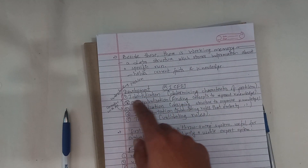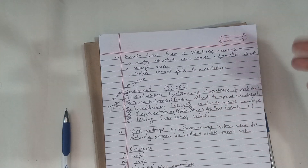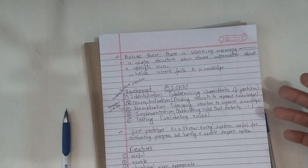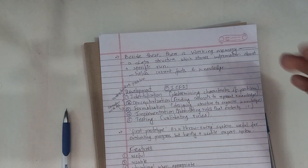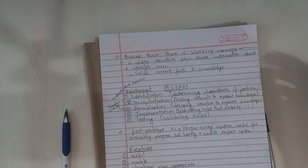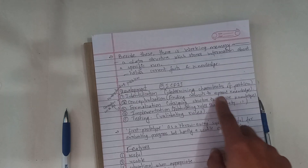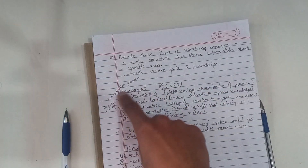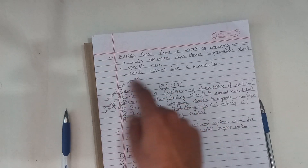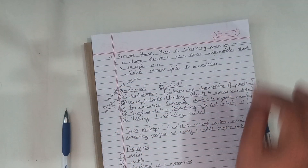The development process involves: identification of what the problem is; determining the characteristics of the problem; conceptualization — there is a problem that represents the knowledge; and finding concepts to represent knowledge. These steps are related to understanding the expert system.